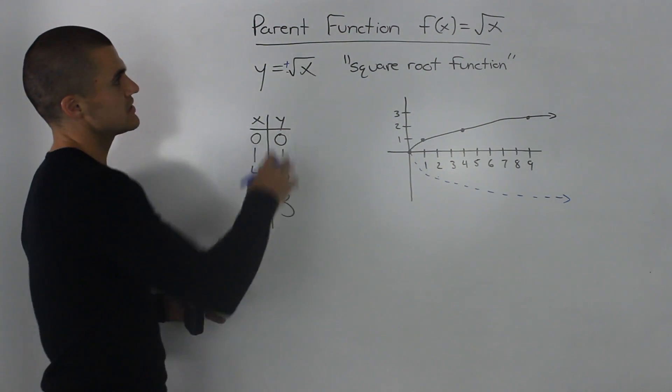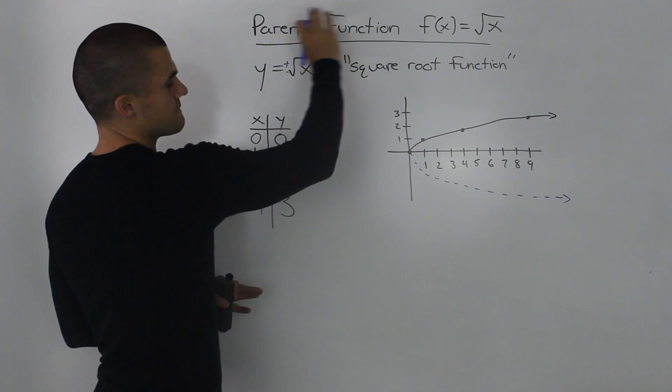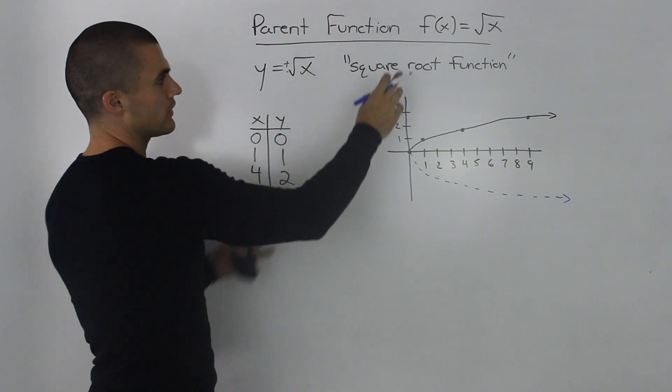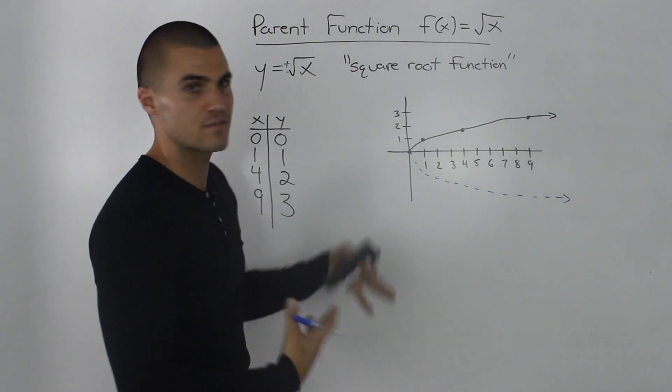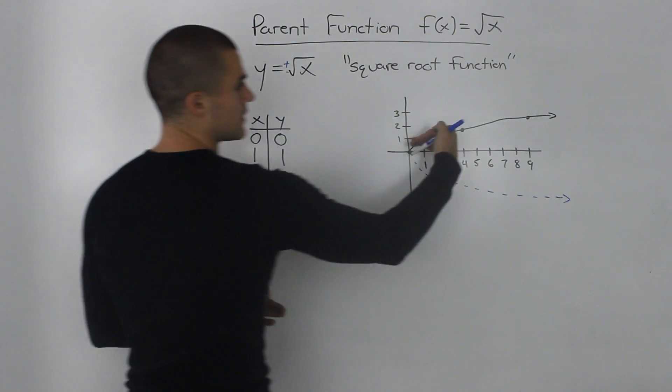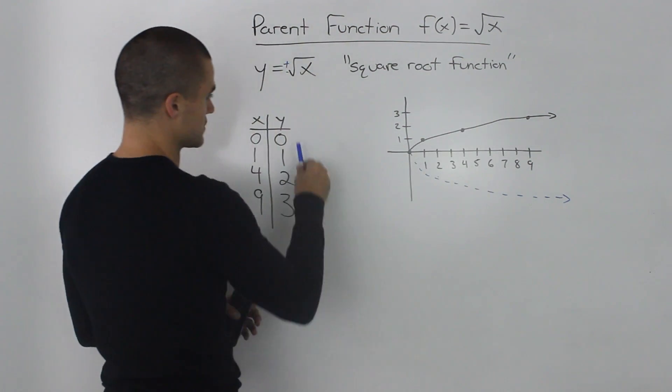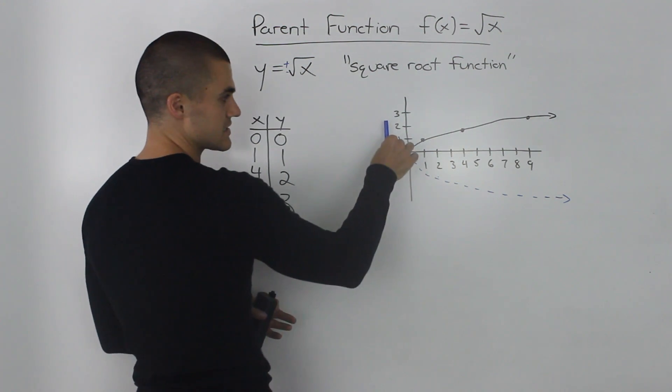However, since we're dealing with functions, we're calling this square root of x a function, we only deal with the positive y values. Because if we dealt with the negative y values instead, it wouldn't pass the vertical line test and it wouldn't be a function.